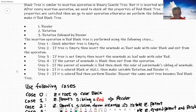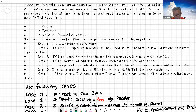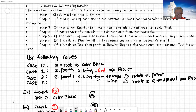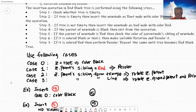We are going to learn rotations. I will show you how to apply the rotations. If the uncle or aunt is color red, then perform the recolor and repeat the same until the tree becomes a valid red-black tree. These are the general steps you will have to go through for inserting a node in the red-black tree.